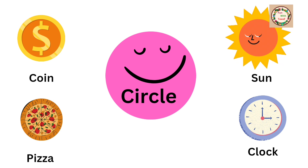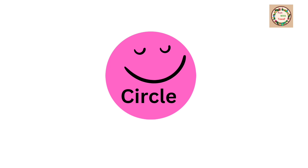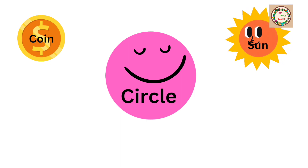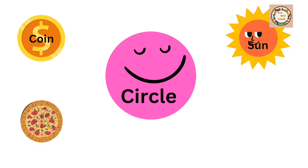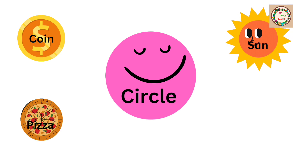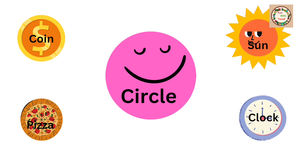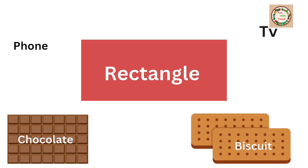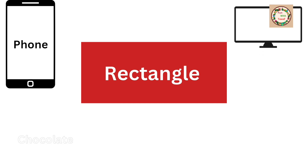Circle shape — now look at some objects which are in circle shape: coin, sun, pizza, clock. Rectangle shape — now look at some objects of rectangle shape: phone, TV, chocolate.